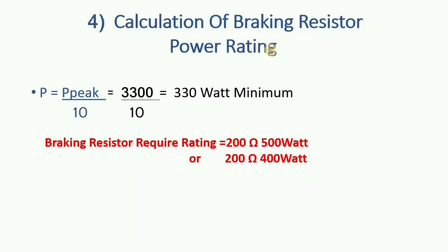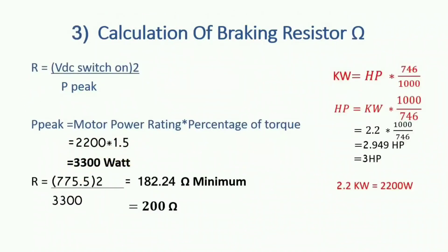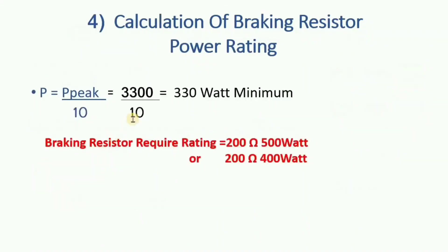Now the calculation of the braking resistor power rating. The formula is: P = P_peak ÷ 10. We found the peak power is 3300W, so 3300 ÷ 10 = 330W. As this may be an odd value and not available in the market, we can use a 200 ohm, 400W or 500W resistor.